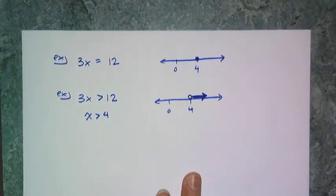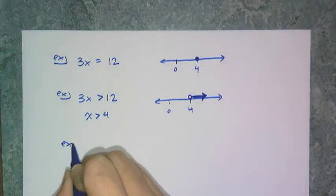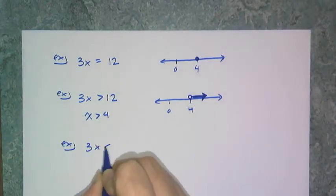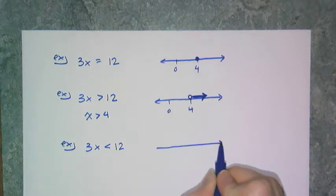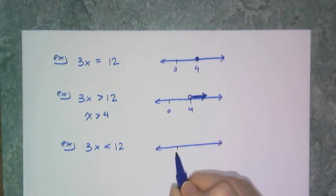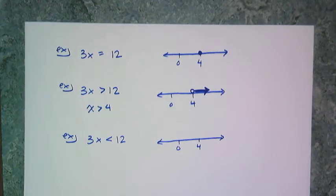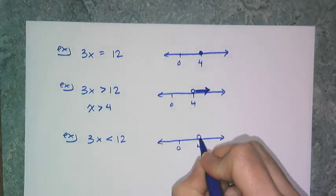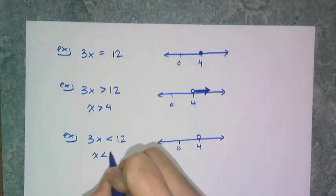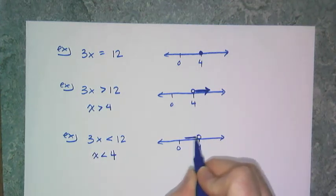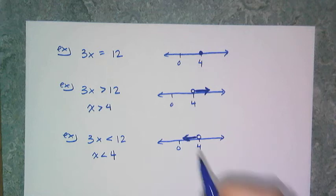If I change this symbol to 3x is less than 12, then I'm looking for every single number where 3 times it is less than 12. Once again, 4 is my boundary because x is less than 4, but now I'm looking for all these numbers in that direction.